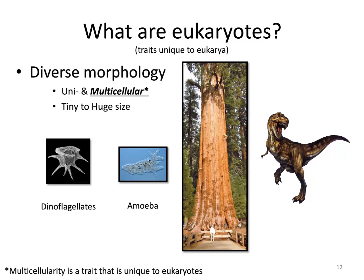Starting with diverse morphology: eukaryotes are very diverse in their appearance. They can be anything from unicellular organisms like dinoflagellates and amoebas, all the way up to the largest organisms on Earth — whether you're talking about a redwood tree or a Tyrannosaurus rex.